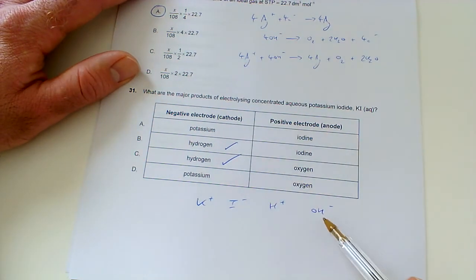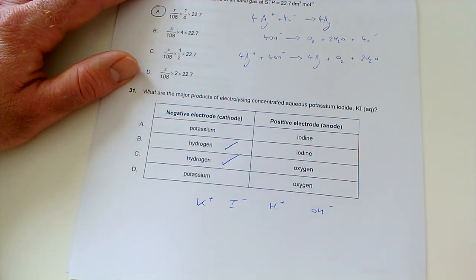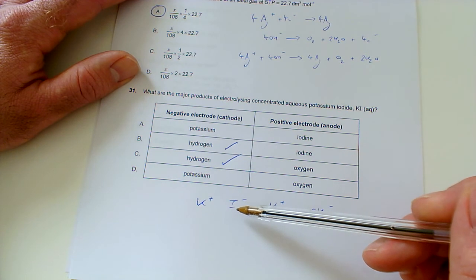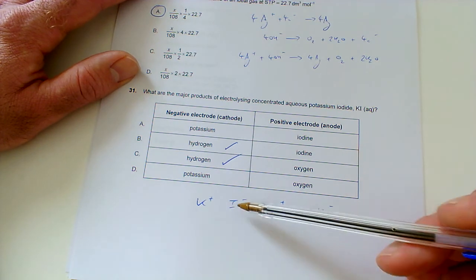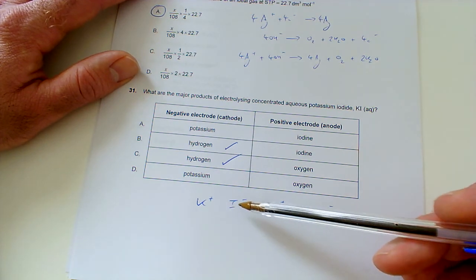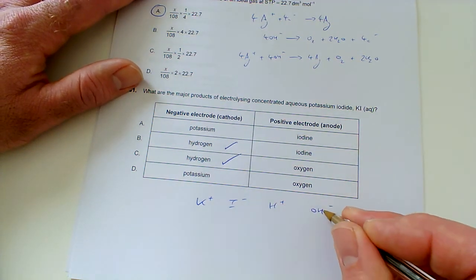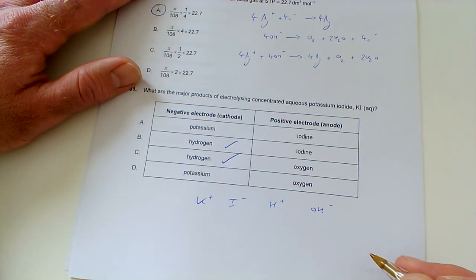What about at this one? Well, technically, hydroxide is discharged in preference over other ions. However, unless it's a very, very dilute solution of a halide ion, we will get the halide. So, the fact that it's concentrated, you'll always get the halide in preference to hydroxide. So, I- is an example of a halide from group 7 or 17. So, we're going to get iodine and not oxygen produced from the hydroxide ions.